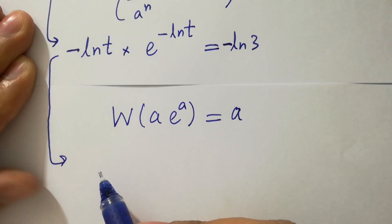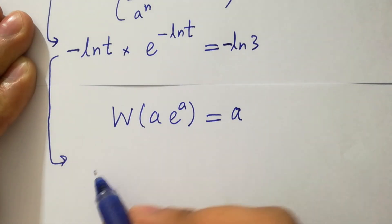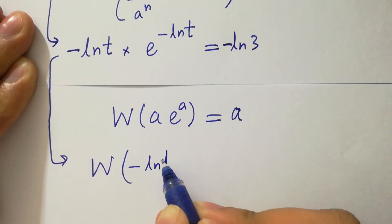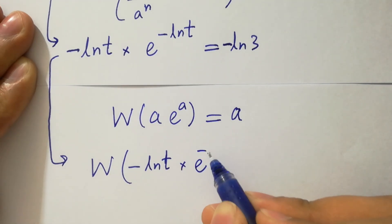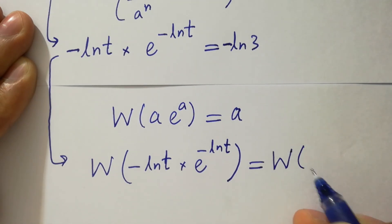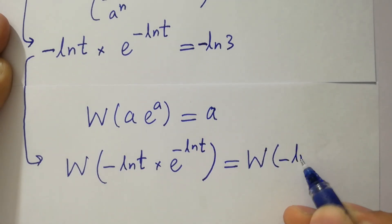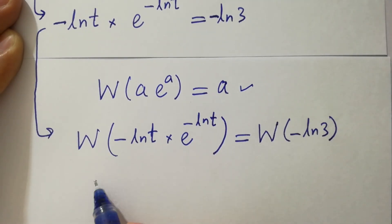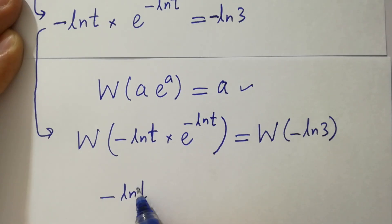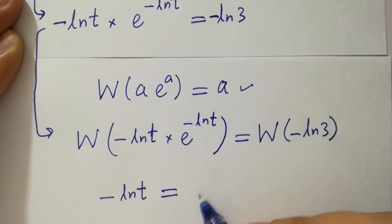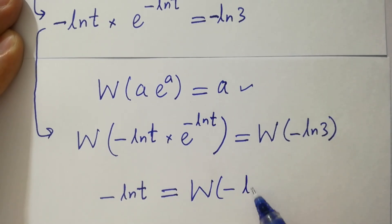By this form we can apply the Lambert W function — take W on both sides. So we have minus ln(t) times e to the power minus ln(t) equals minus ln(3). According to the W function identity w(a times e^a) equals a, so W of minus ln(t) times e to the power minus ln(t) equals minus ln(t), equal to W(minus ln(3)).